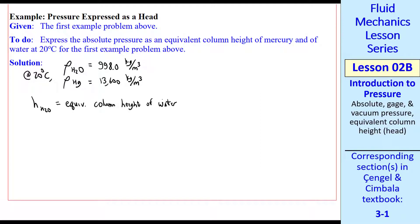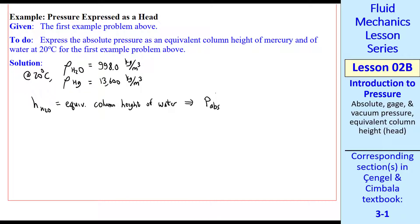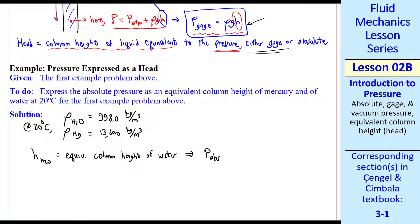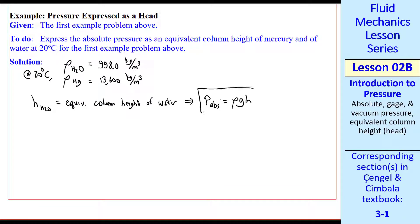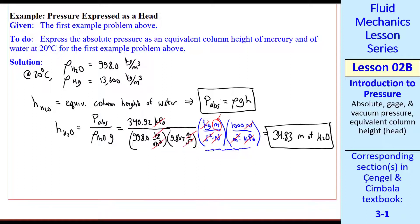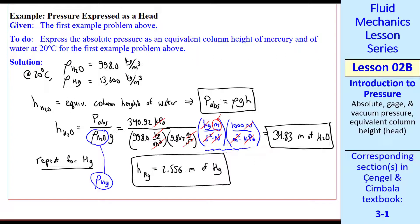For the water, we'll call H sub H2O the equivalent column height of water. In this case, we're using an absolute pressure, a little bit different from what we did here where we used a gauge pressure. As I said, you can use either. Just make sure your reader knows which one you're using. So in this case, P abs is rho GH. So H sub H2O is P absolute over rho H2O G. We plug in absolute pressure from the first example, density of the water, G. We now plug in two unity conversion factors. A kilogram meter per second squared is a newton, and a thousand newton per meter squared is a kPa. All the units cancel except this meter in the numerator. Our equivalent column height of water is thus 34.83 meters. We repeat for the mercury. The only thing we change is this density. Everything else is the same. And we get 2.556 meters of mercury as the equivalent column height.